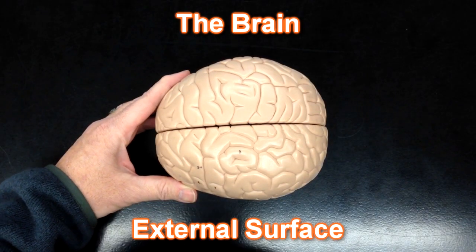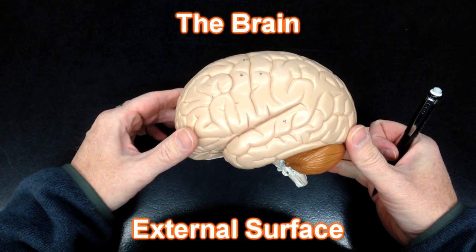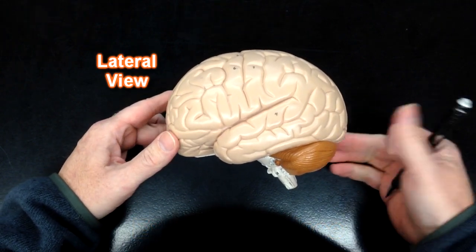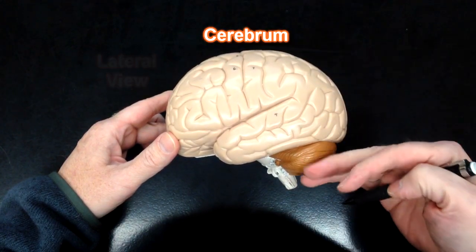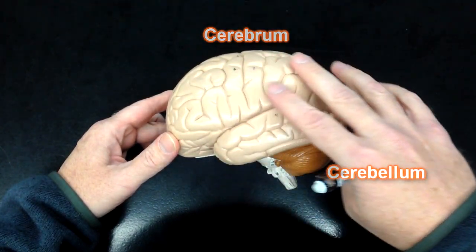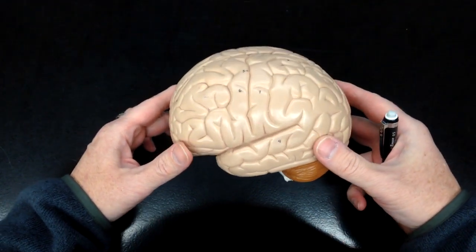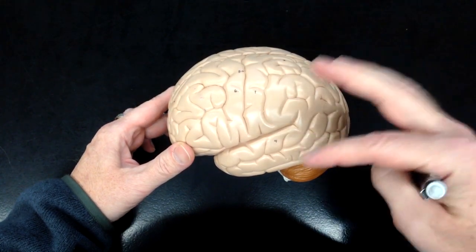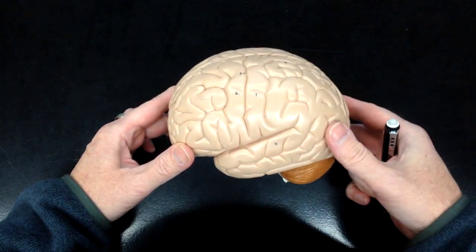In this video I'll be running through structures of the brain. What we're looking at here is a lateral view of the brain. We can see we've got the cerebrum up here and the cerebellum. The cerebrum has a bunch of bumps and grooves, and what that does is it increases the surface area so that we can pack more cells and more function into the brain.